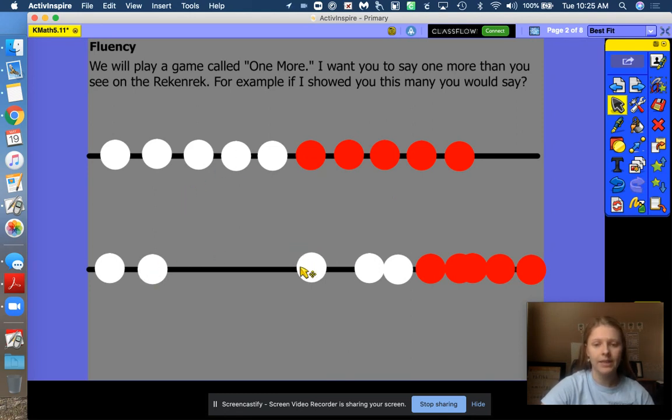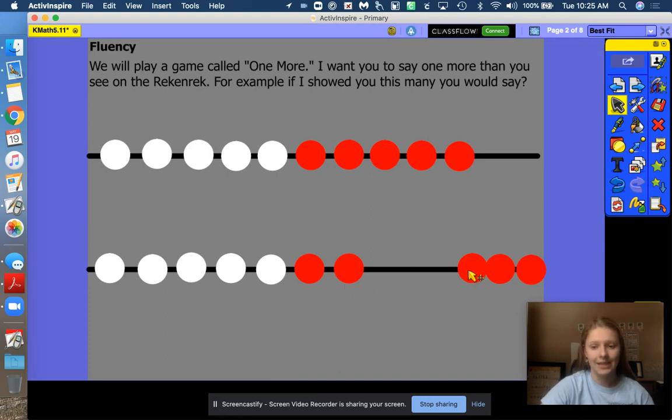Good, keep going friends. 10 and 3, 13. 10 and 4, 14. 10 and 5, 15. 10 and 6, 16. 10 and 7, 17. 10 and 8, 18. 10 and 9, 19. And remember, 10 and one more 10 makes 20. Two 10s makes 20.